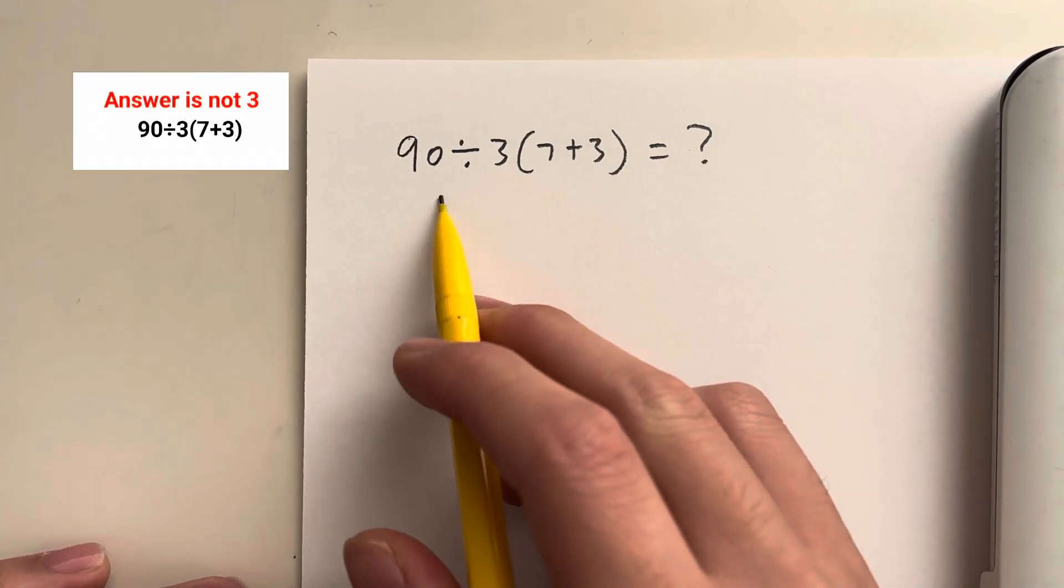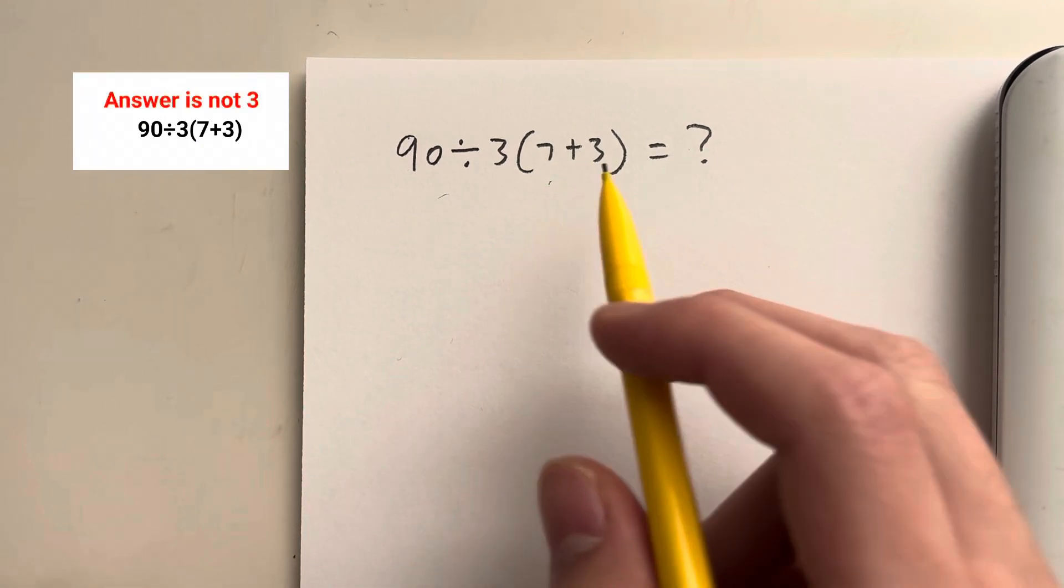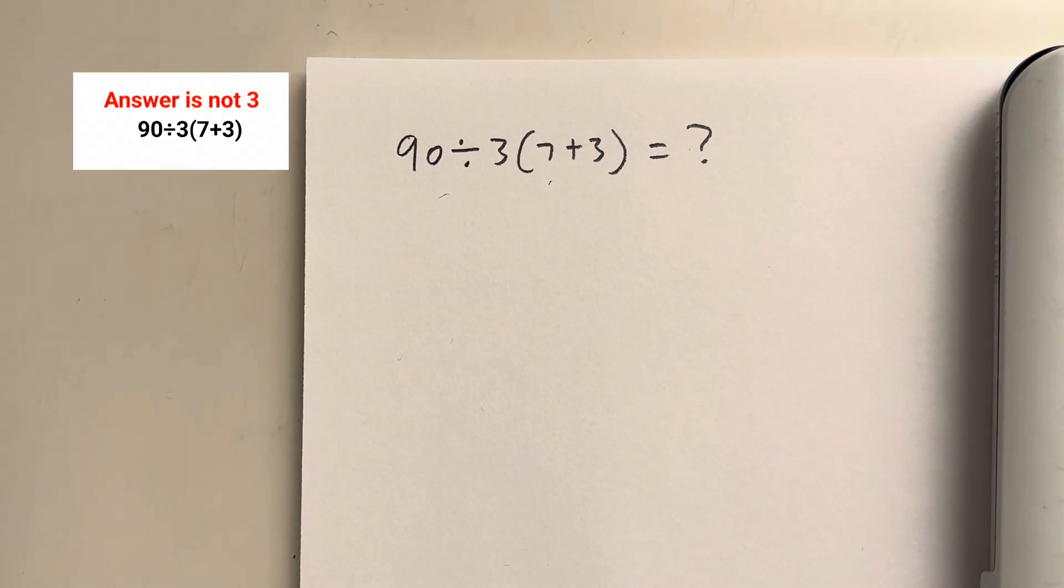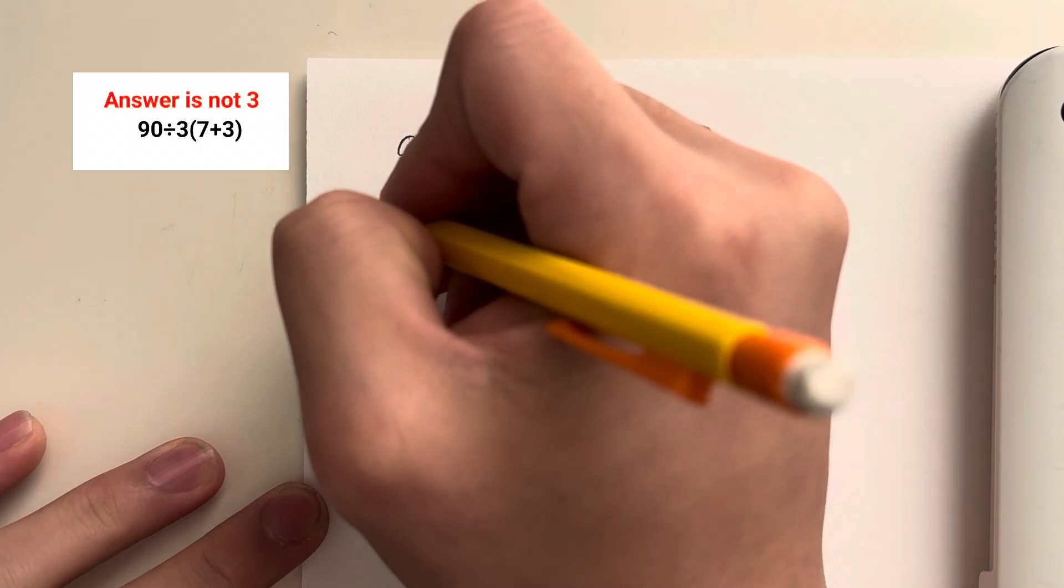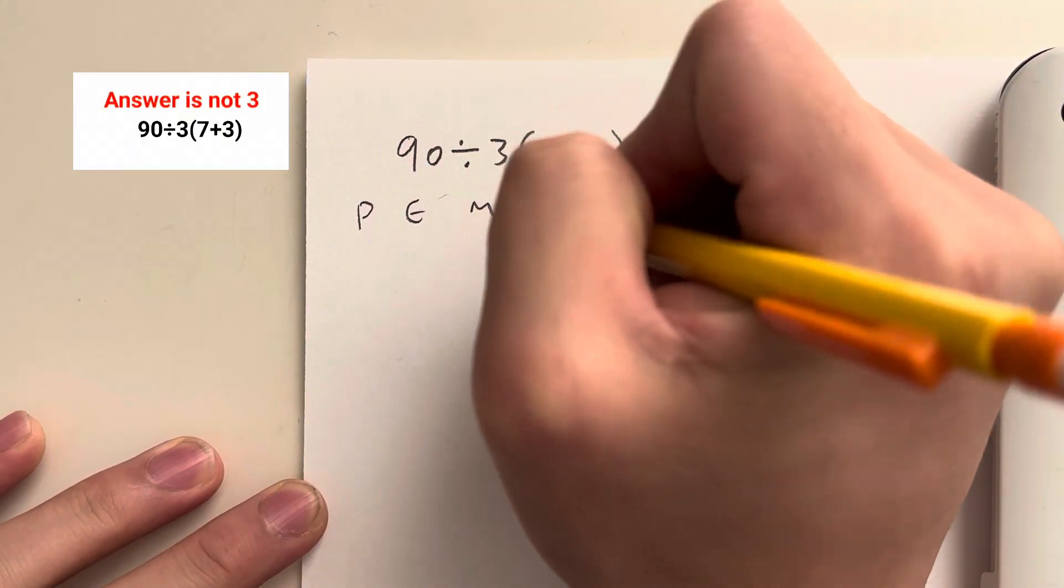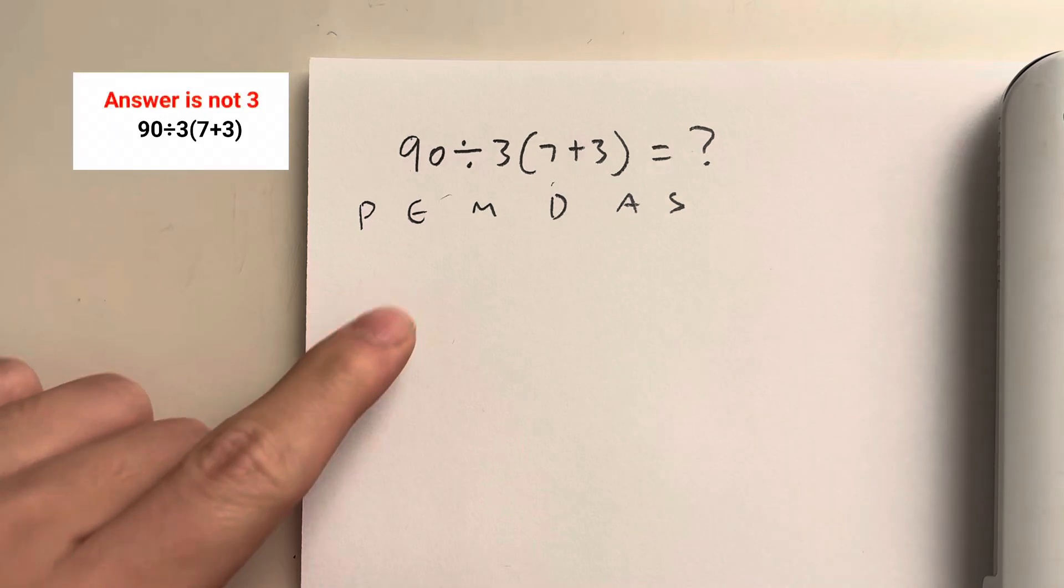Okay, so let's start off with this one: 90 divided by 3 times 7 plus 3. Now, how do we solve this question? We have to remember PEMDAS, which is P-E-M-D-A-S. So PEMDAS.